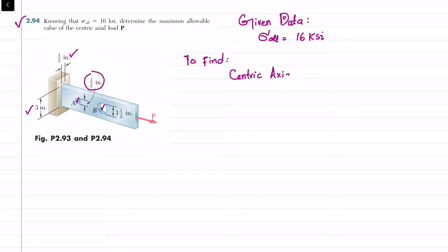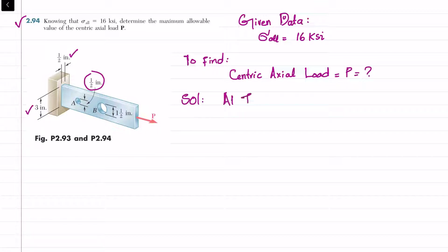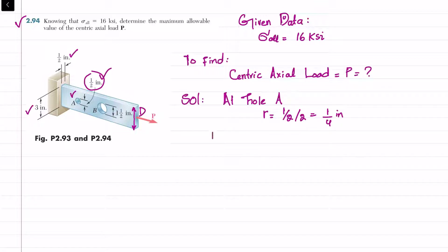We have two holes: hole A and hole B. Starting with hole A — its diameter is 1/2 inch, so the radius is 1/2 divided by 2, which equals 1/4 inch. Also, as discussed in problem 2.93, the width capital D equals 3 inch.